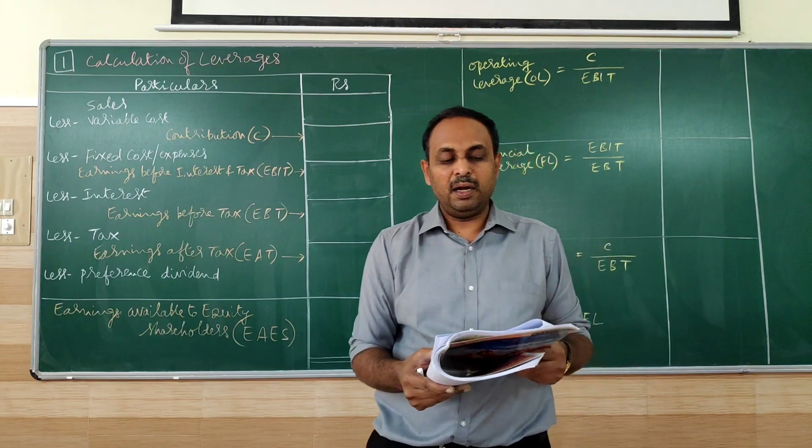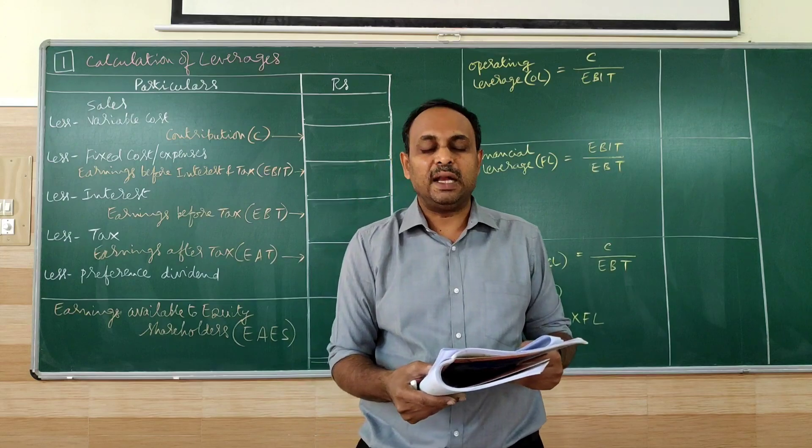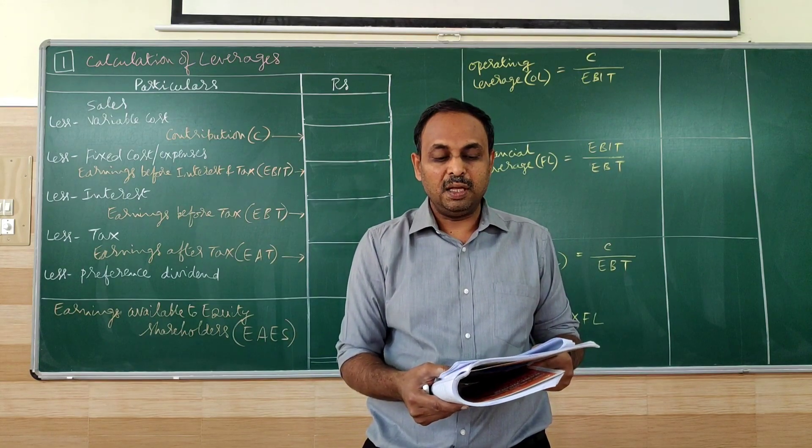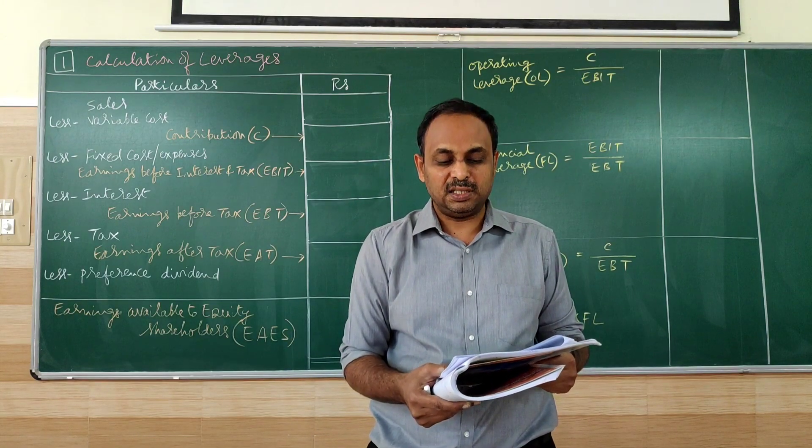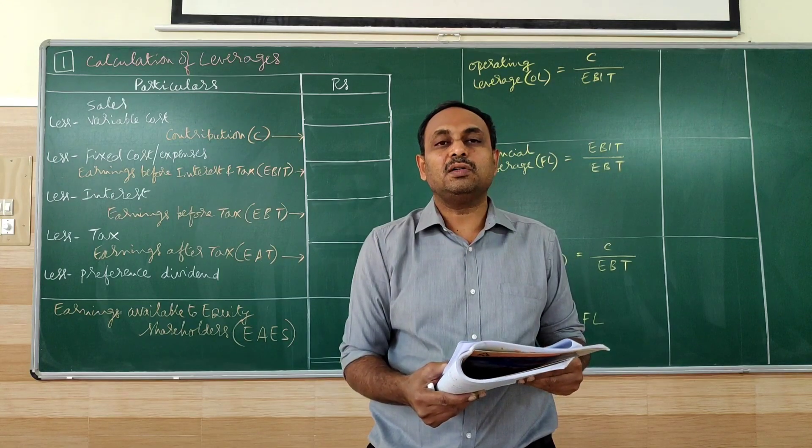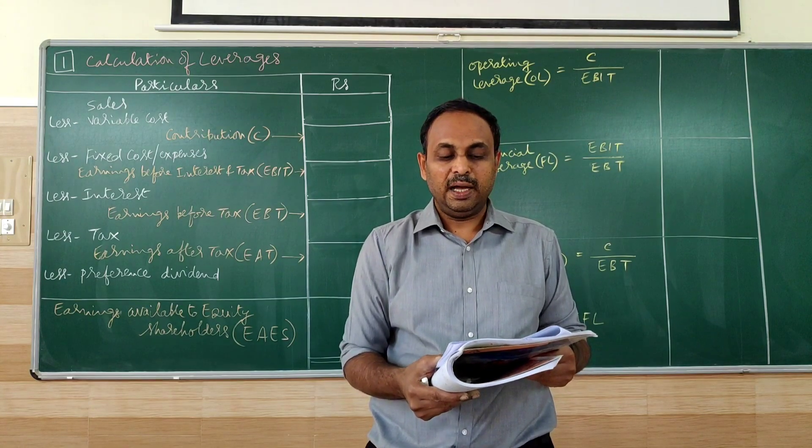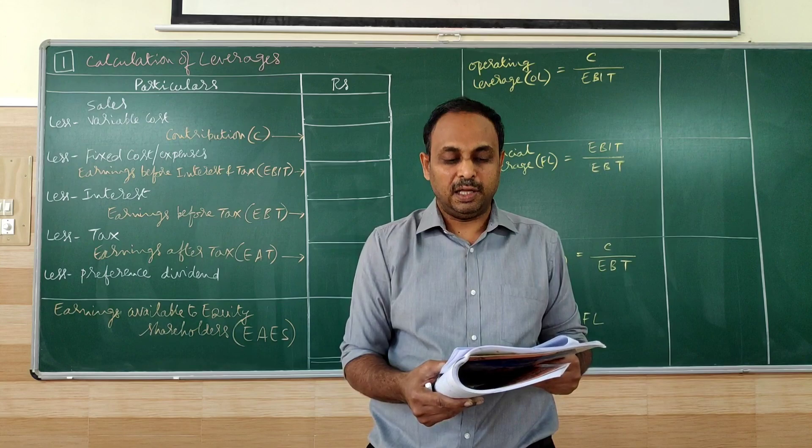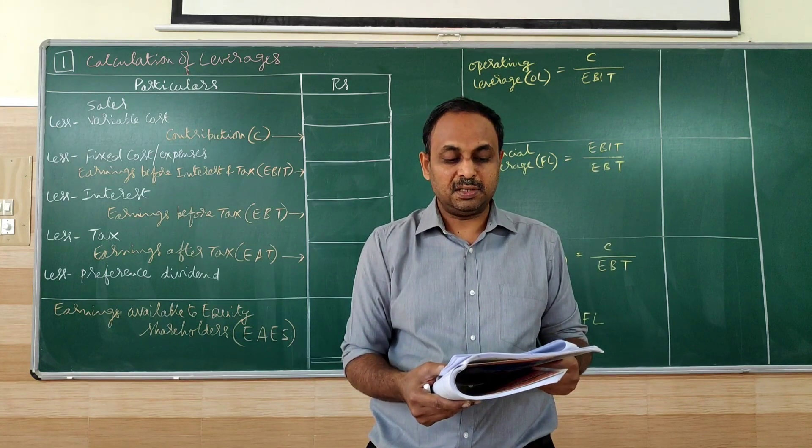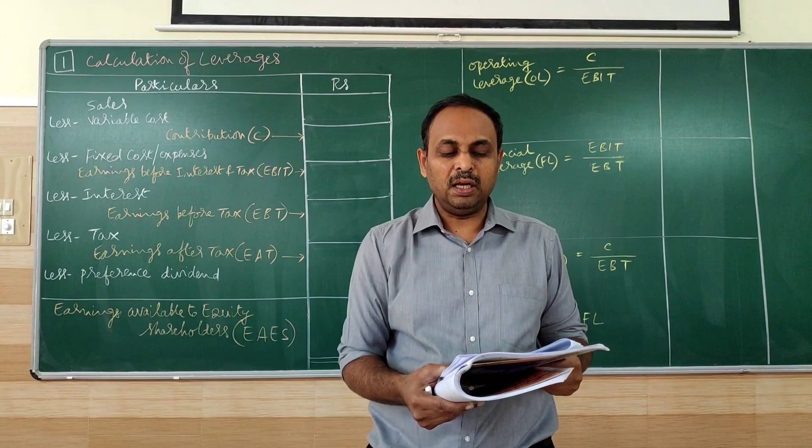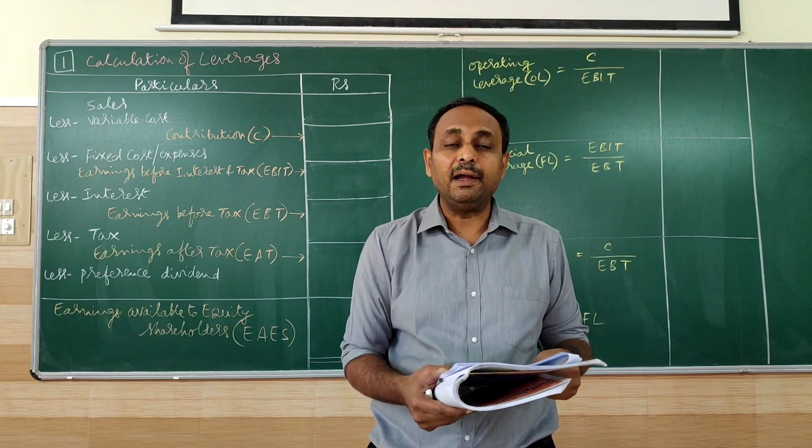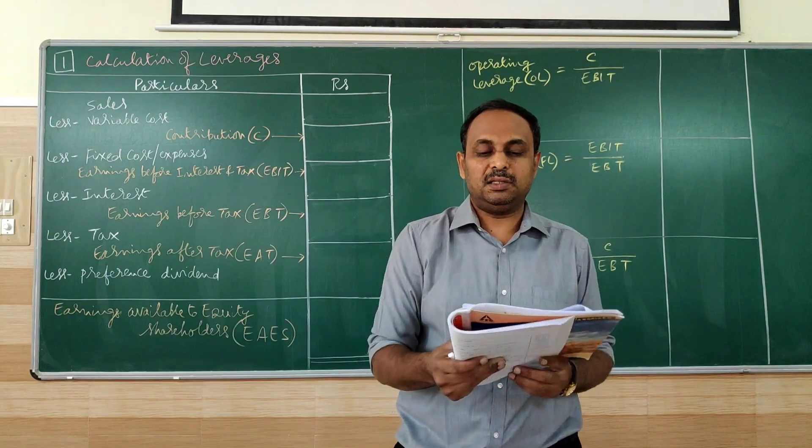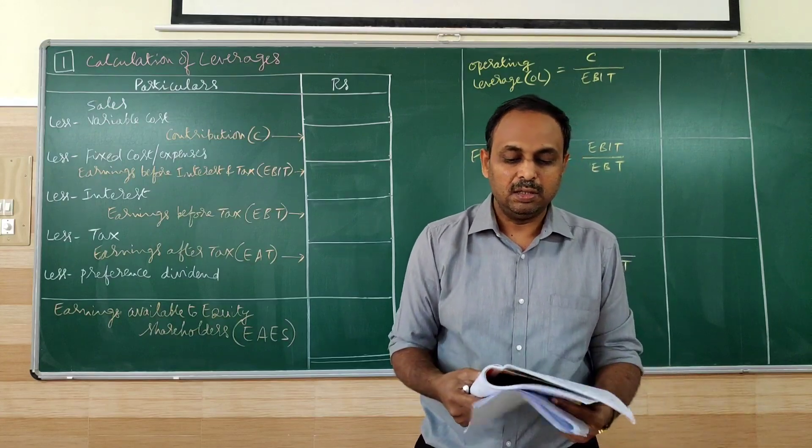For the year ended we have sales of rupees 10,50,000, variable cost 7,67,000, fixed cost 75,000, interest 1,10,000, tax at 30%. Calculate all the leverages and interpret the results.